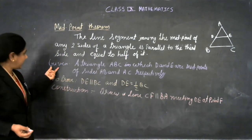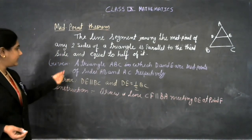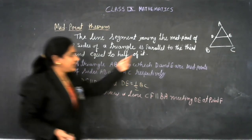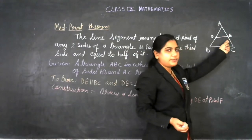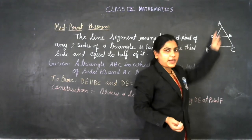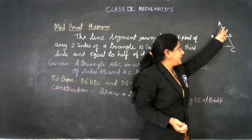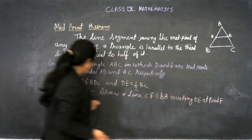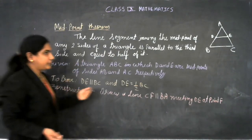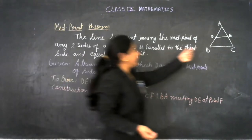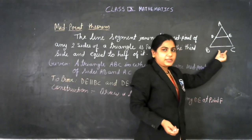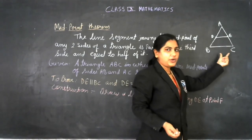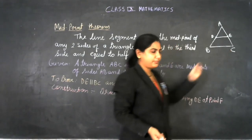So here we are given triangle ABC in which D and E are the midpoints of sides AB and AC respectively. And we have to prove that DE is parallel to BC and DE equals half of BC.